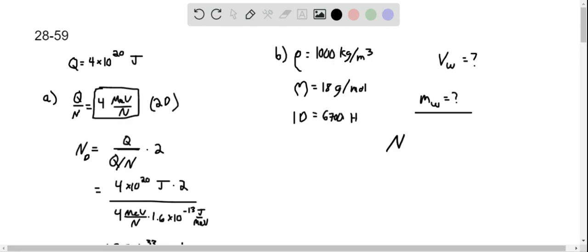I know that my number of water molecules can be based on the mass of water over the molar mass of water times Avogadro's number. I can rearrange this to solve for the mass of water: the number of water molecules multiplied by the molar mass of water divided by Avogadro's number.